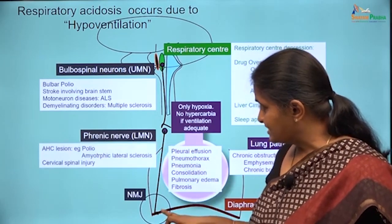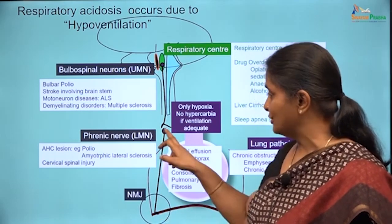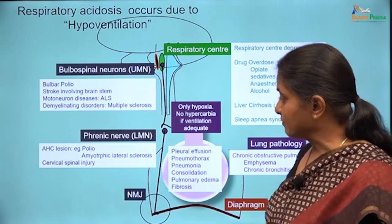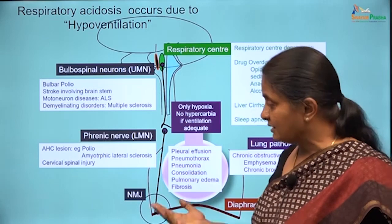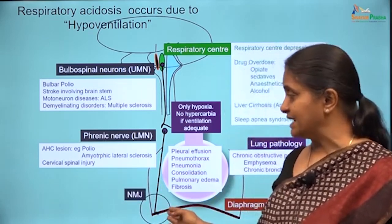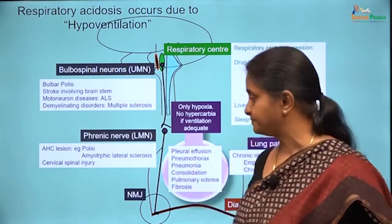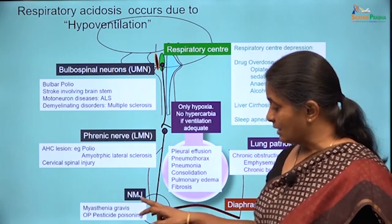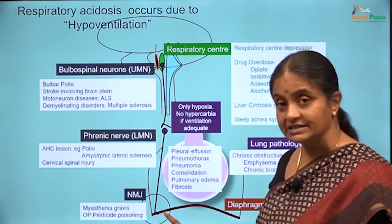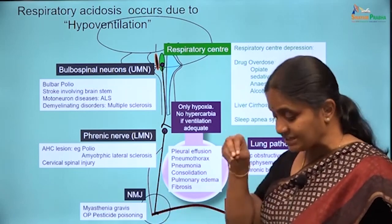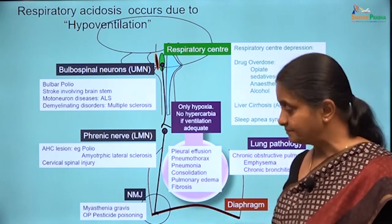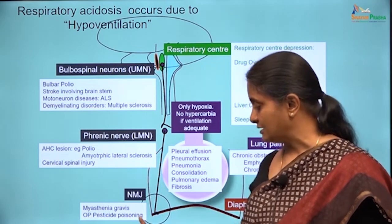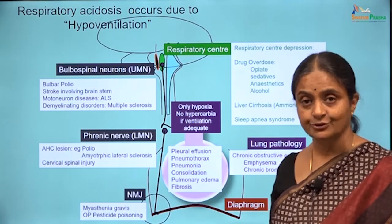Looking at diseases affecting the lower motor neuron: polio can affect the anterior horn cells in the spinal cord, and amyotrophic lateral sclerosis can affect the lower motor neurons as well. A very common cause for respiratory paralysis is cervical spinal injury due to accidents. At the neuromuscular junction, the disease entities are myasthenia gravis — an autoimmune disorder affecting the nicotinic acetylcholine receptors on the muscle surface, so acetylcholine released by the nerve cannot act.